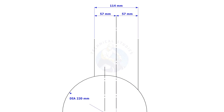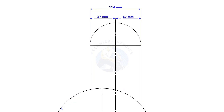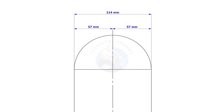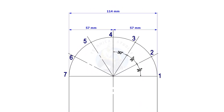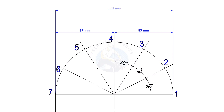Draw a half circle of radius half OD of the branch. Divide this half circle into 6 equal segments. If the pipes are above 6 inches, you may need to increase the segments for better accuracy.